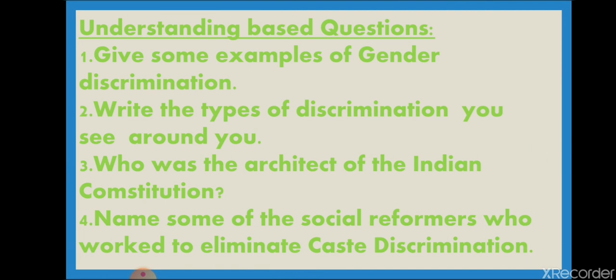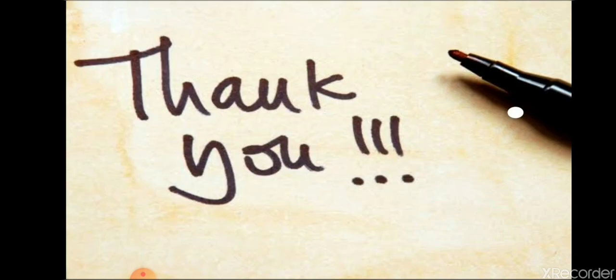Here are some understanding-based questions: Give some examples of gender discrimination. Write the types of discrimination you see around you. Who was the architect of the Indian Constitution? Name some of the social reformers who worked to eliminate caste discrimination from India. This chapter of civics is now completed. Thank you everyone.